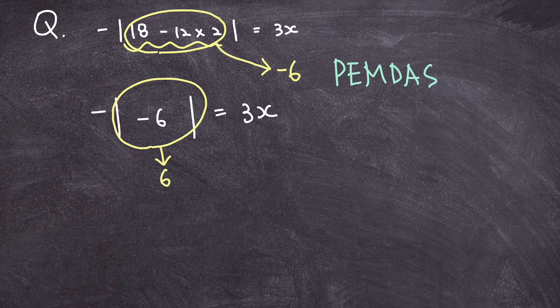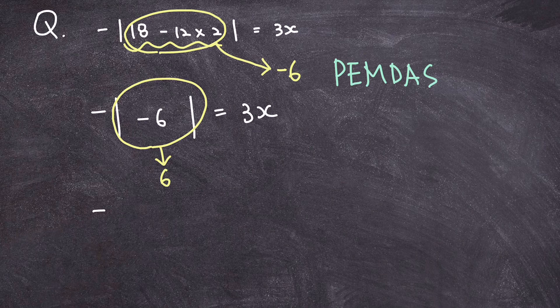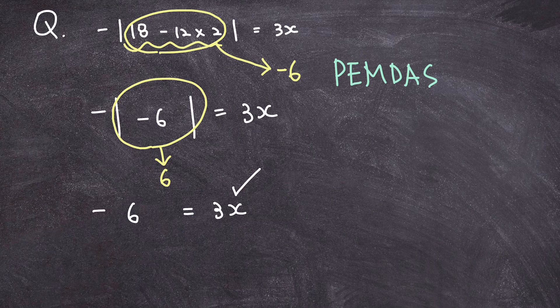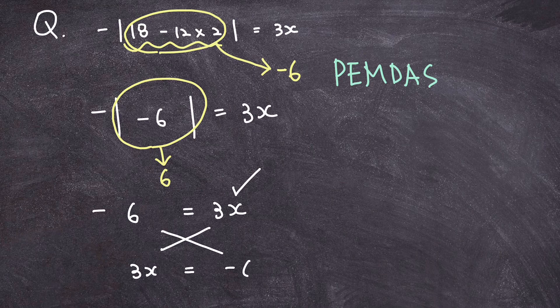So, if I rewrite the whole thing, by replacing absolute value of negative 6 with 6, I have negative 6 is equal to 3x. And since I do not like having the unknown variable of x on the right side of the equation, I'm going to switch places. So, 3x is equal to negative 6.